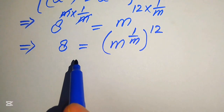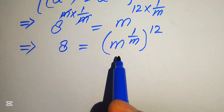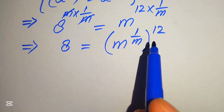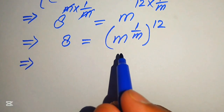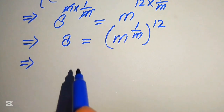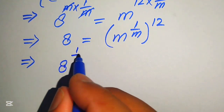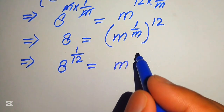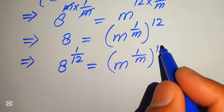Our first goal — moving the variable term to the right hand side — is complete. Now we move to our second goal: moving the constant terms to the left hand side. For this we need to move this 12 to the left hand side. To remove the 12 from the right hand side, we take the 12th root on both sides, meaning we apply a 1 over 12 power on both sides.